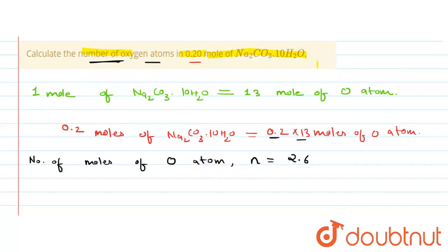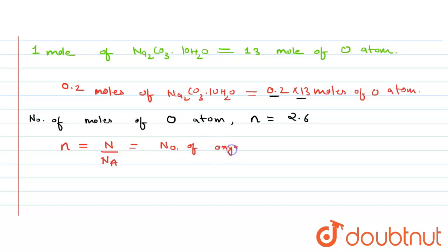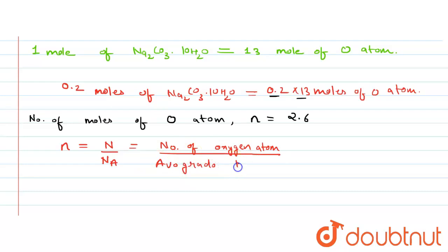The number of moles is given as small n = capital N divided by Na, where capital N is the number of oxygen atoms and Na is Avogadro's number, taken as 6.022 into 10 to the power 23.